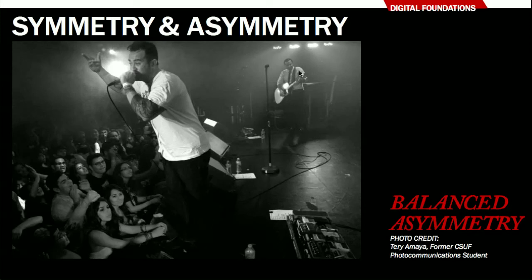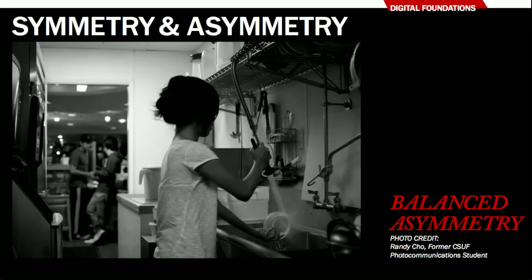Another example of balanced asymmetry: our primary focal point is the woman washing the dishes. She's almost on the center line but facing right, and her activity is to the right, so most of the image's weight is on the right side of the frame. Again we have point and counterpoint — the counterpoint being two slightly out-of-focus subjects interacting in the background.